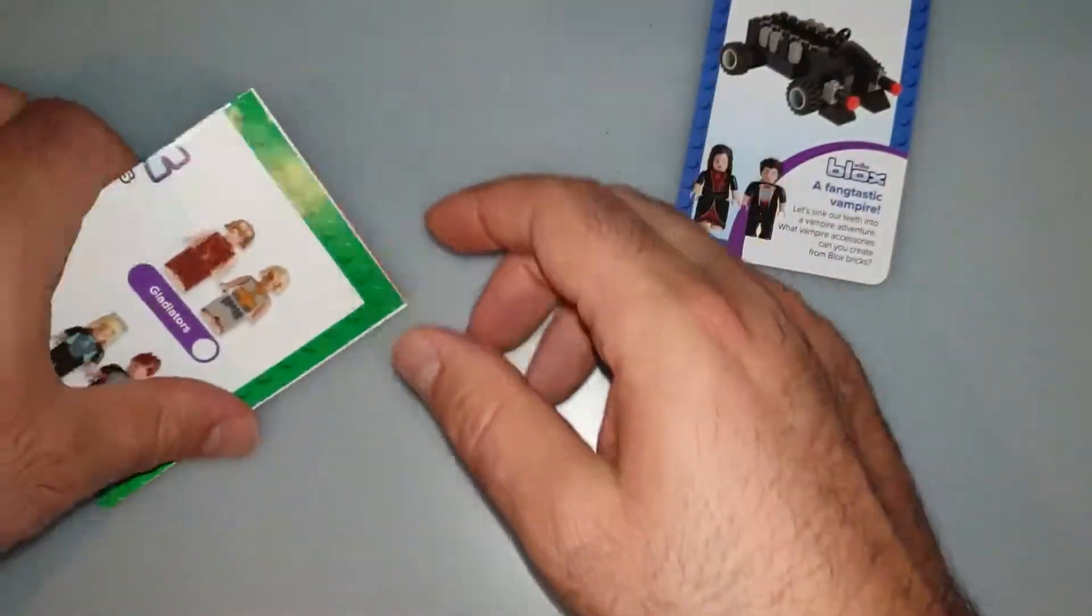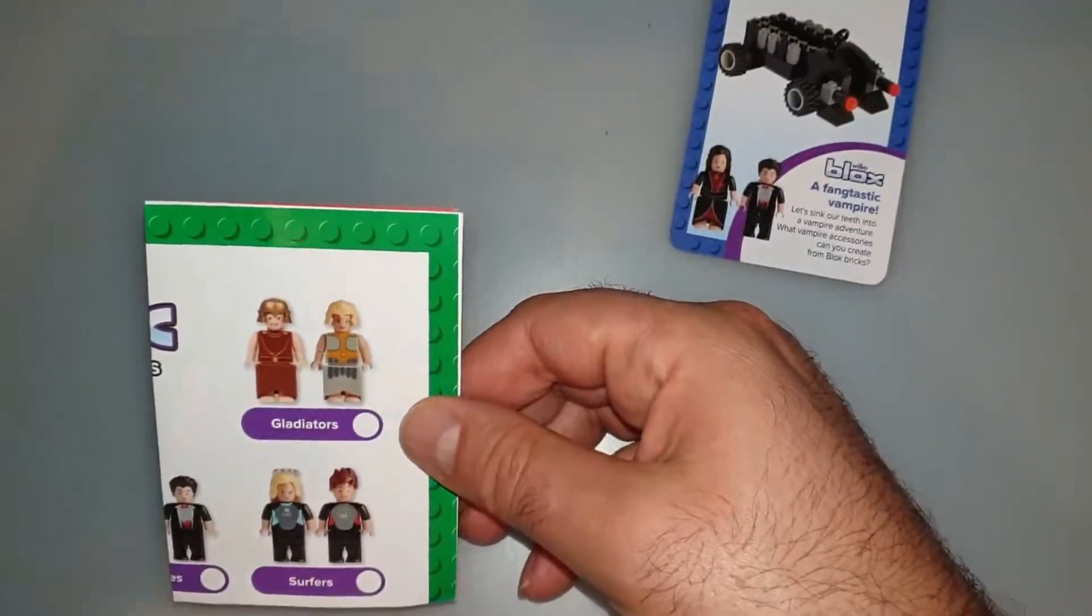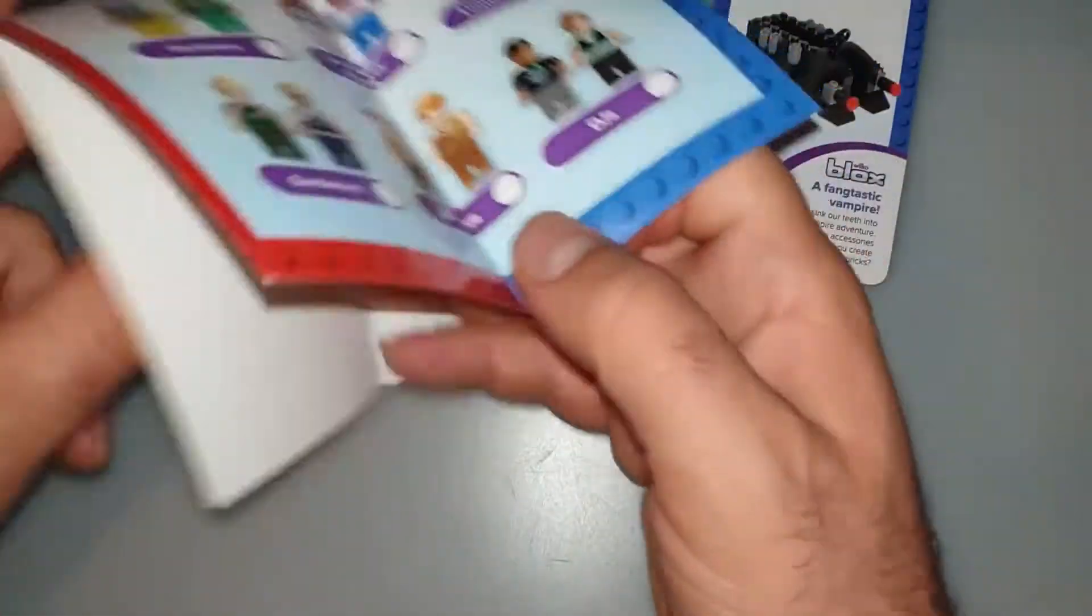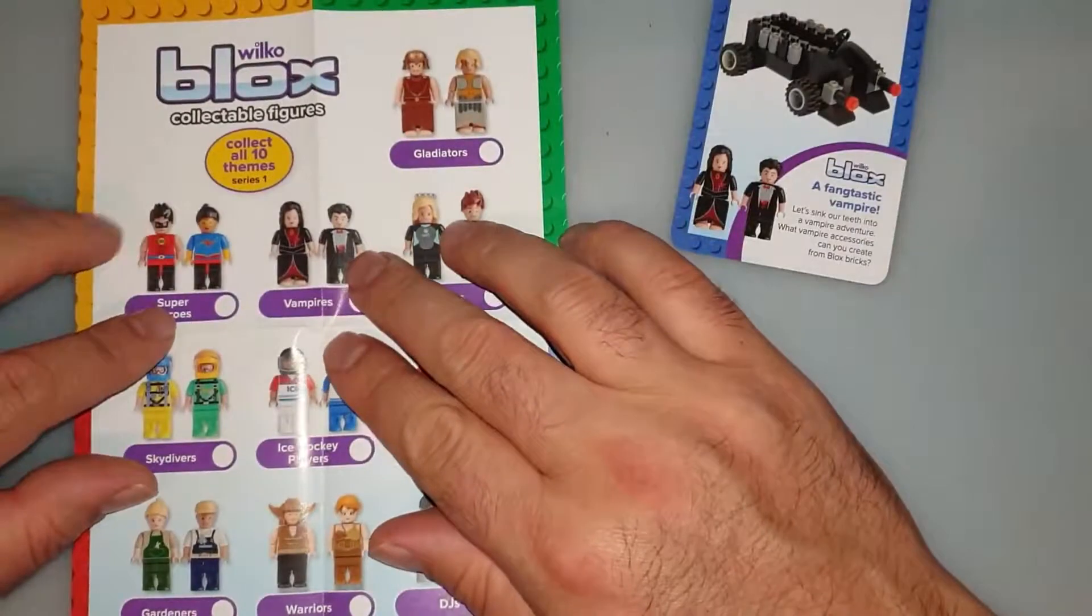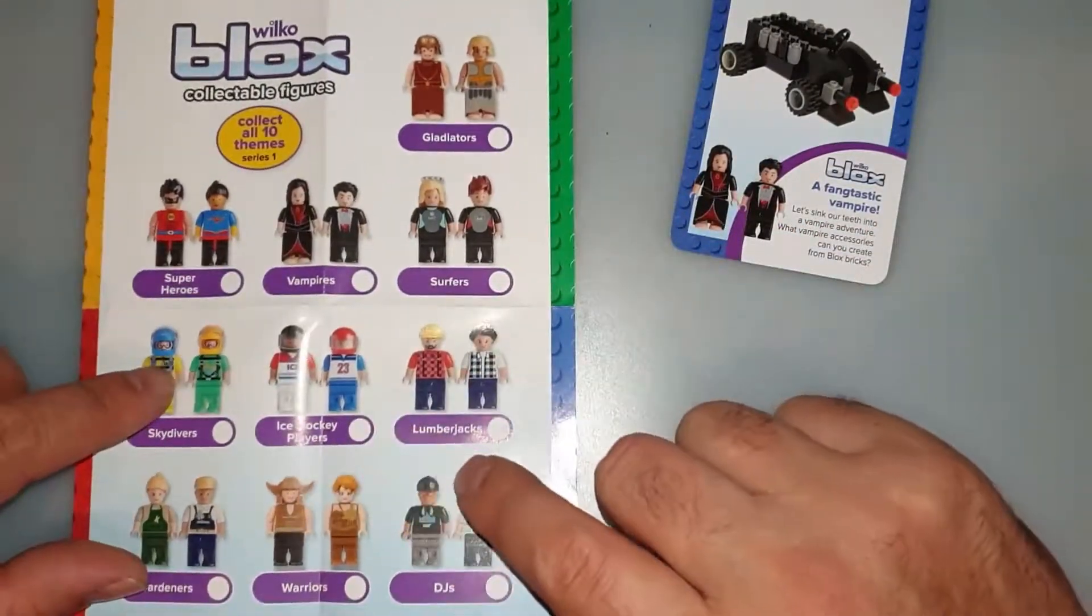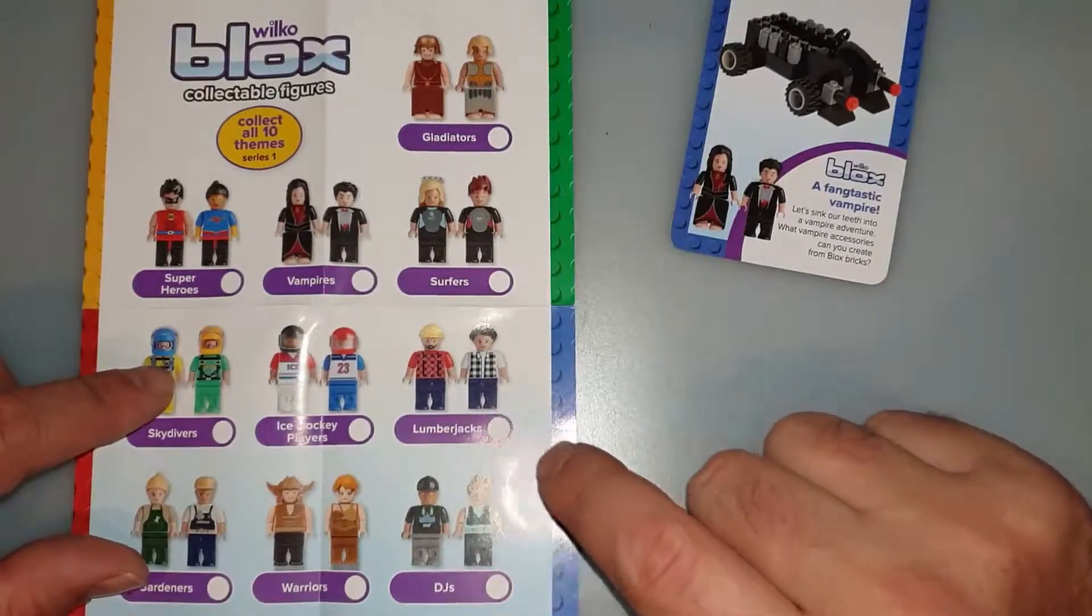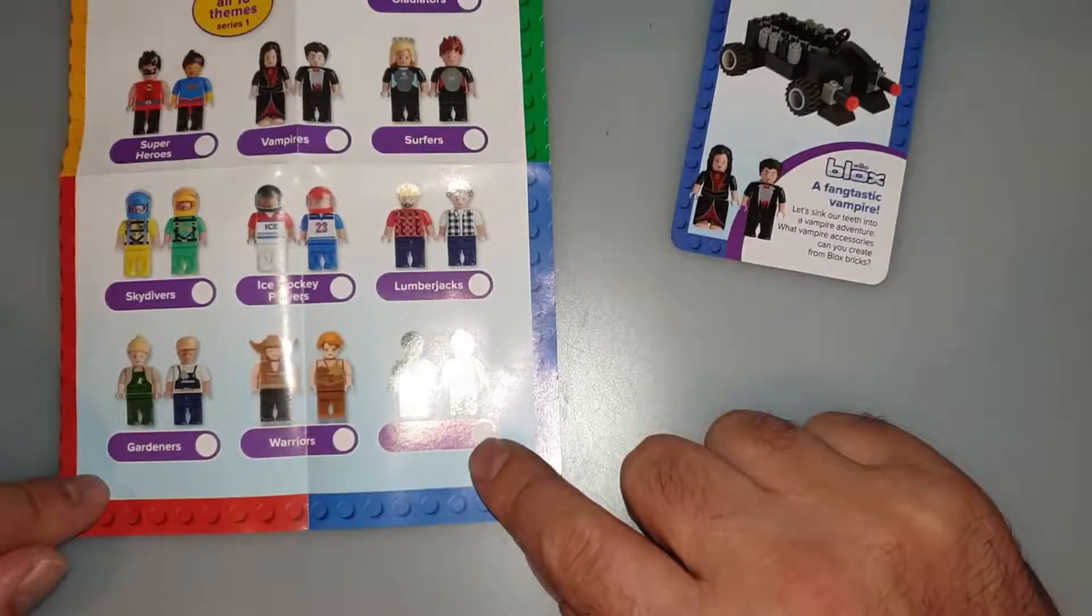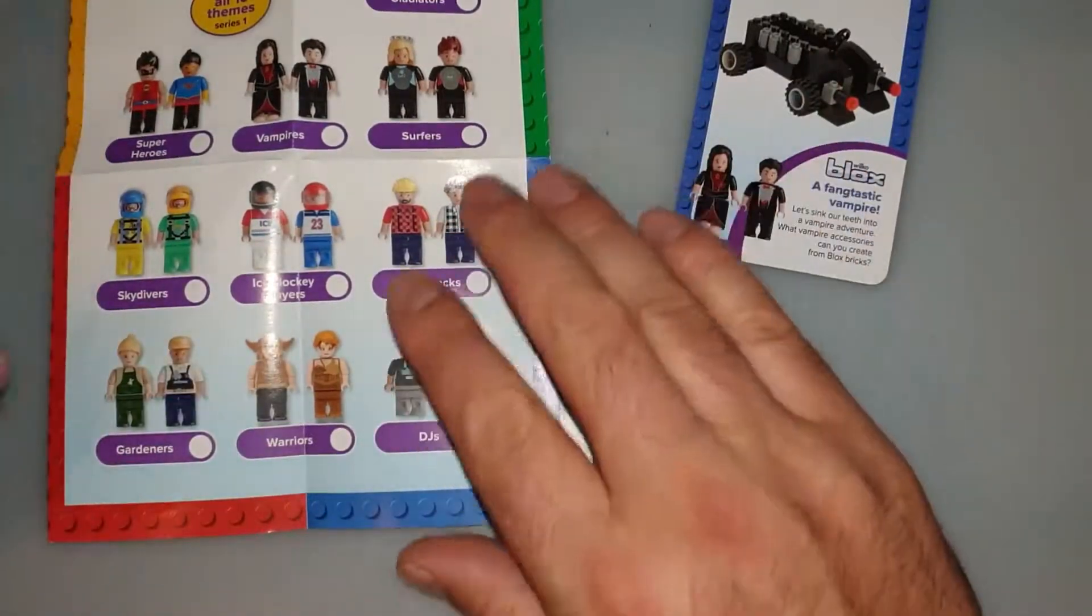Here are all the things we can get. So we have superheroes, vampires, surfers, gladiators, skydivers, ice hockey players, lumberjacks, DJs, warriors, gardeners. Weird set but okay.